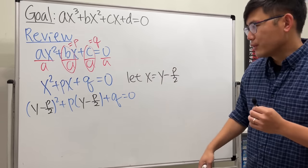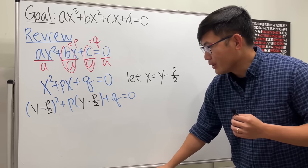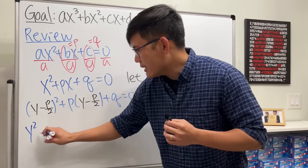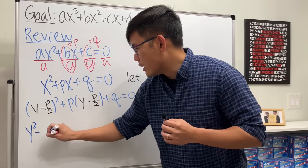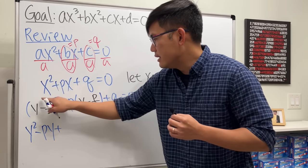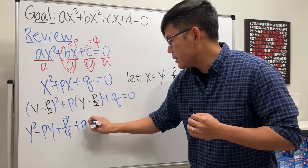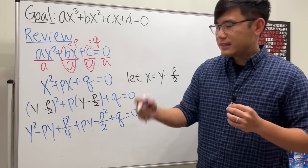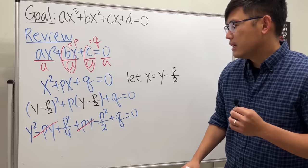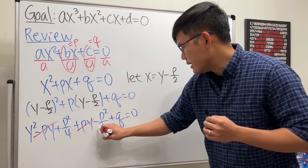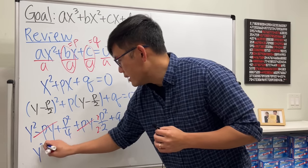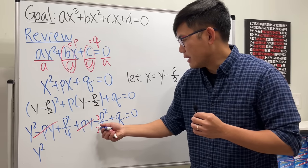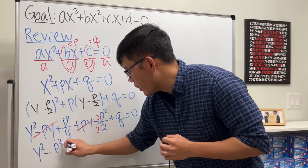By the way, I have notes available on Patreon. Now let's multiply it out. We replace k with -p/2: we get (y - p/2)² which gives y² - py + p²/4, then distribute the p giving +py - p²/2, and then plus q equals zero. This and that cancel — the py terms cancel — that's very nice.